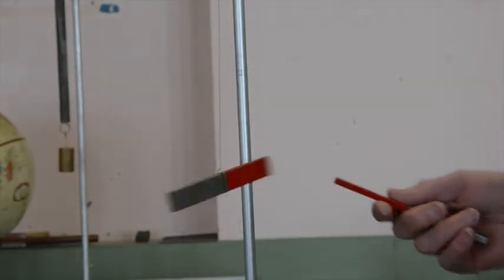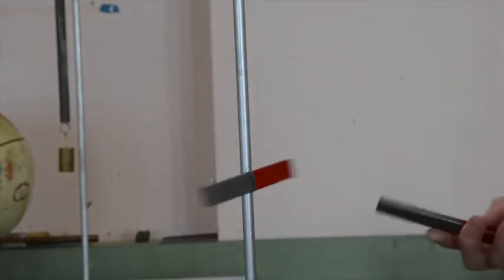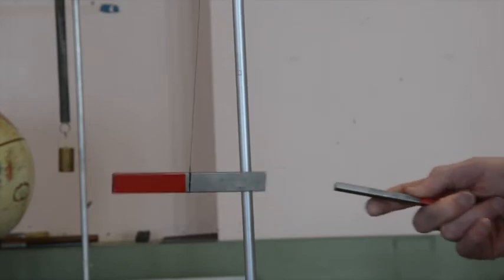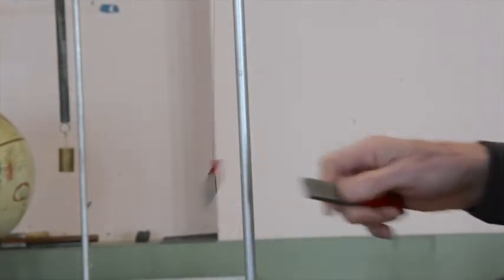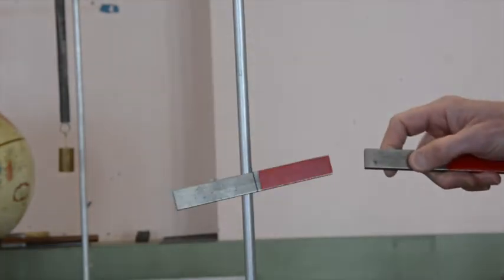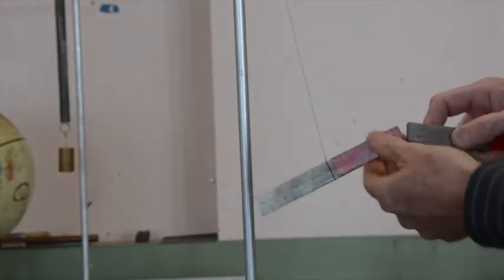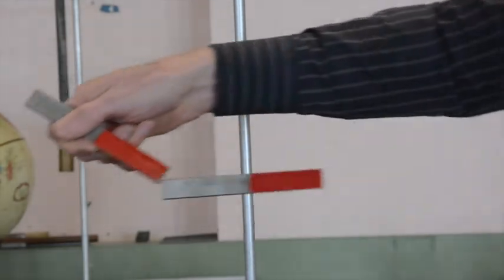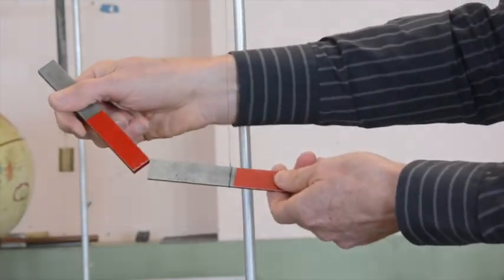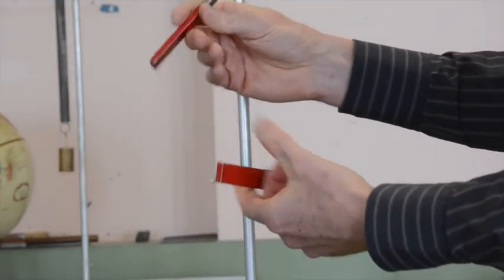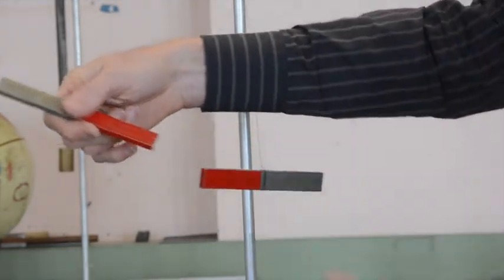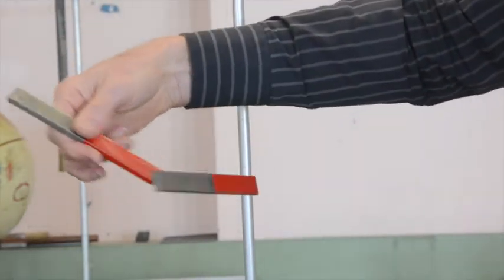So for instance, two north poles of a magnet will repel each other, as you can see quite well. Two south poles repel. North and south poles will attract. But again, south repels south, and north repels north and attracts south.